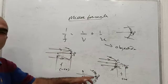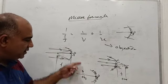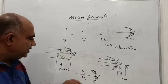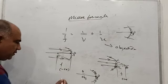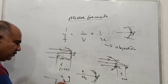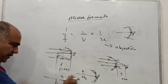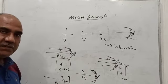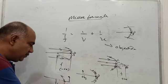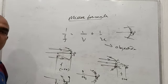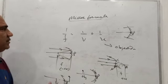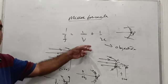The object is always kept to the left of the pole and above the principal axis, so the object height is always positive, and the object distance (u) is always negative. For a concave mirror, images formed in front of the mirror are real and inverted — their heights and distances are both negative. When the object is placed between the pole and the focus, the image formed is virtual, erect, and behind the mirror, giving a positive image distance and positive image height.